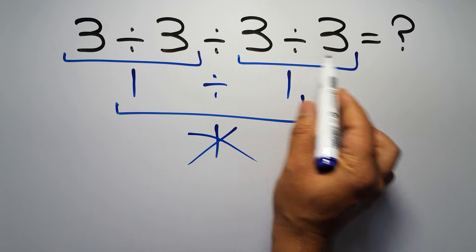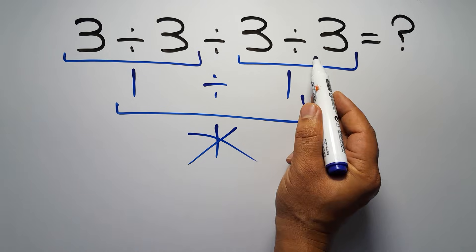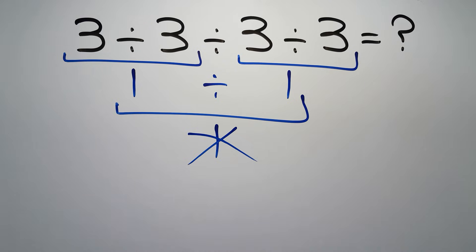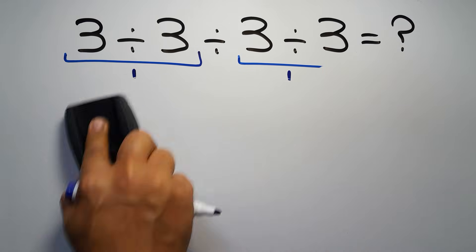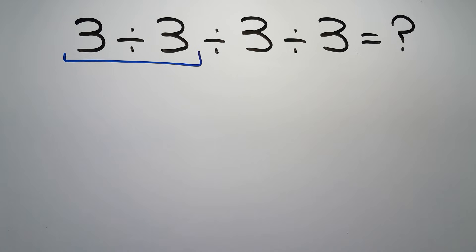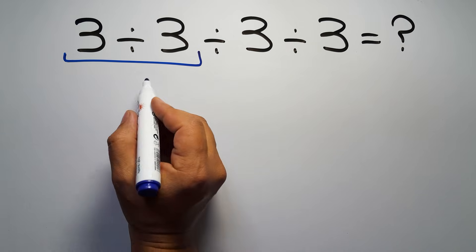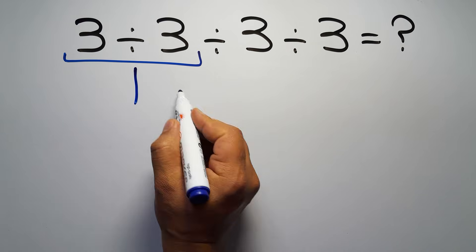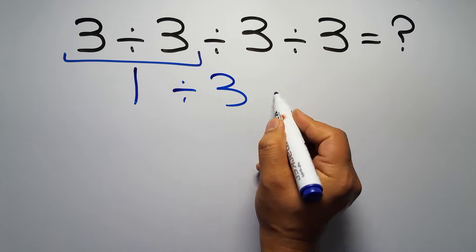So here first we have to do this division, then this division, and finally this division. If we do this division before this division, it is wrong. So first, this division: 3 divided by 3 is just 1. So 1 divided by 3 and again divided by 3.